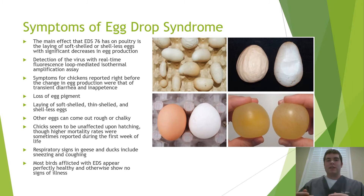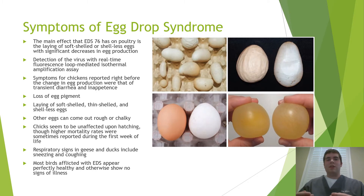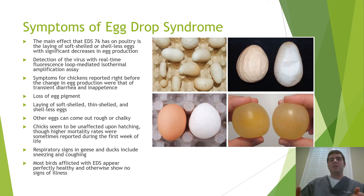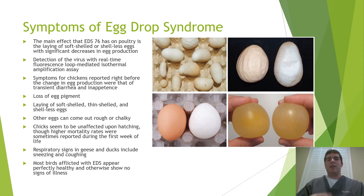Another clinical sign present in geese and ducks that is not present in chickens and turkey is that of respiratory issues such as sneezing and coughing. This is likely due to the longer necks of geese and ducks as opposed to chickens, turkey, and quail, and egg drop syndrome virus has an effect on the respiratory system that it doesn't have on the other birds. Perhaps the most unfortunate reality is that egg drop syndrome virus tends to go unnoticed because the birds seem perfectly healthy for the most part, and no one notices an issue until they start laying the bad eggs.